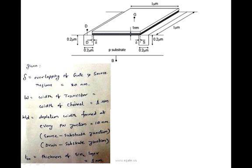W, the width of the transistor — also called width of the channel — is 1 micrometer. Depletion width formed at every PN junction is 10 nm. The depletion region always forms across a PN junction, so we will first examine where the PN junction is going to be formed, and once we identify it, we can see in which region the depletion region is going to be present.